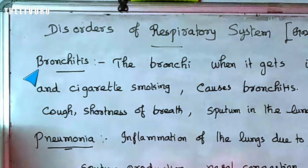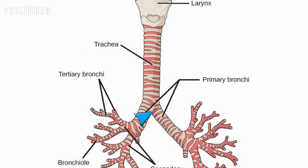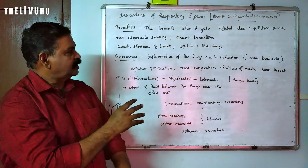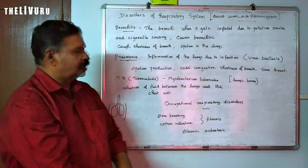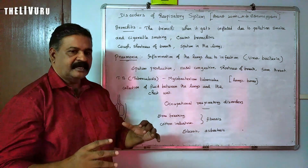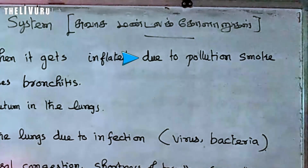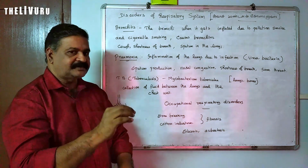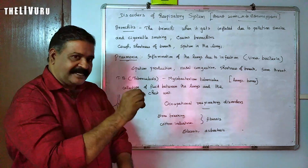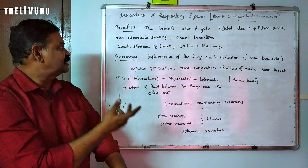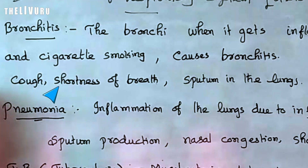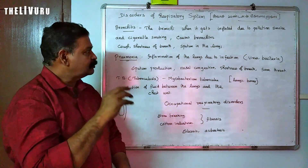Another disorder is bronchitis. Bronchitis is inflammation of the bronchi, caused by pollution and cigarette smoking. The bronchi become inflamed and weakened due to pollution and cigarette smoking, restricting airflow to the lungs.